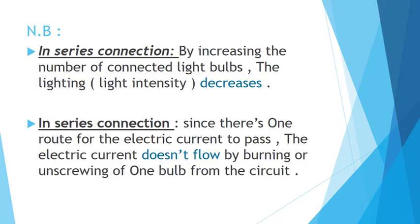This is something related to resistance, which you will study in prep. In series connection, by increasing the number of connected lamps, the lighting decreases — because it has only one route. In series connection there is only one route for the electricity to pass, so the electricity is divided by the number of lamps. As the number increases, the lighting decreases.